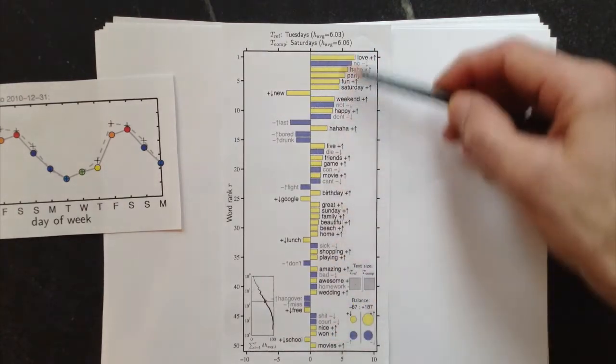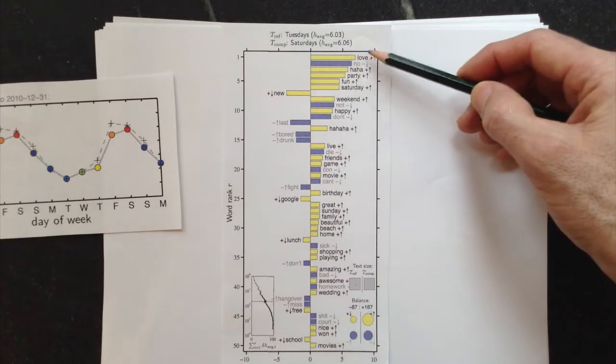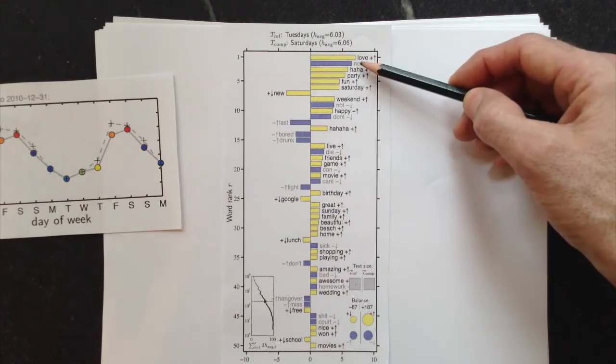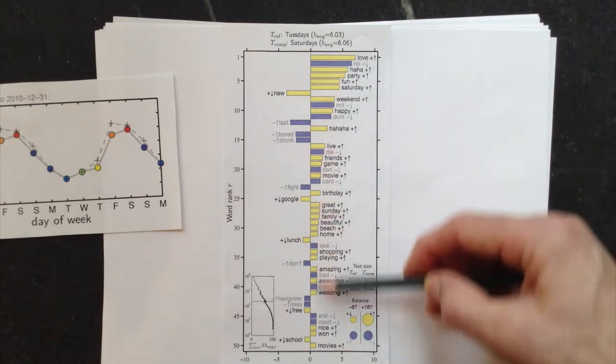So we've also ordered them here, so they're ordered in size. So the most dominant word is love, and then ha-ha and party. No's effect is very large too, so we've ordered them by magnitude.